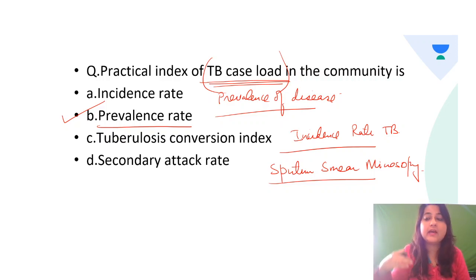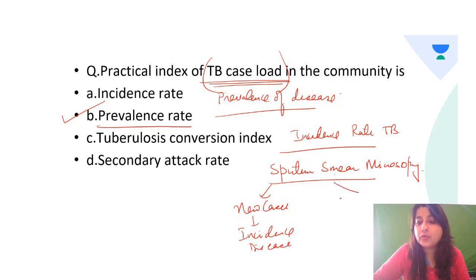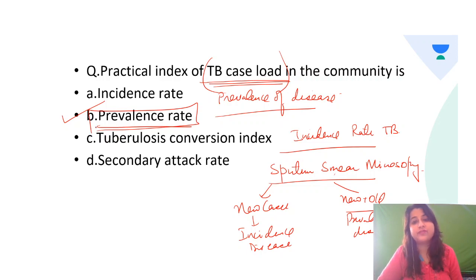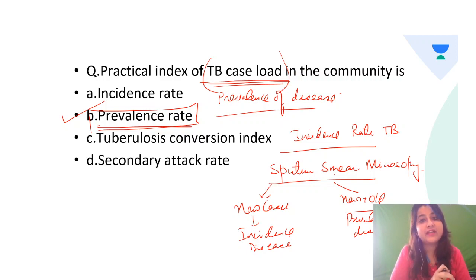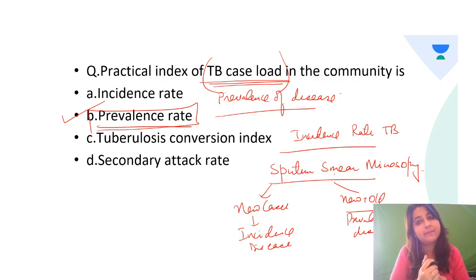Sputum smear microscopy among new cases tells us about the incidence of TB disease. If done among new plus old cases, it tells us about the prevalence of disease. So the TB case load is best denoted by the prevalence rate, given by sputum smear microscopy. Sputum smear microscopy is the first investigation of choice for any person presenting with cough for more than two weeks, and for mass screening of TB to detect people likely developing the disease.